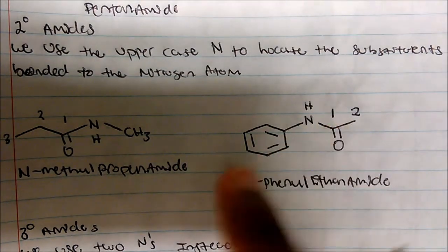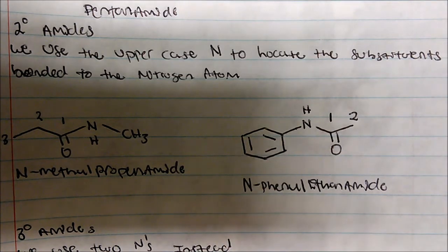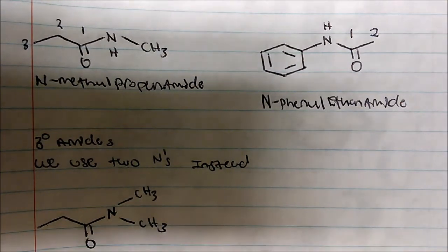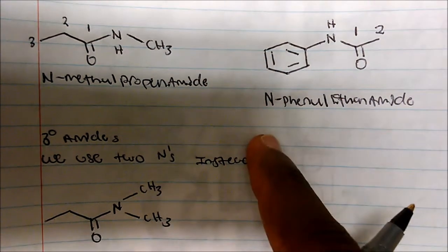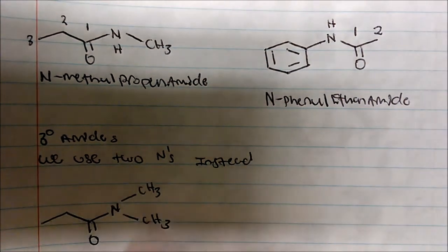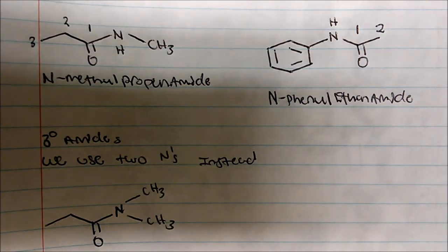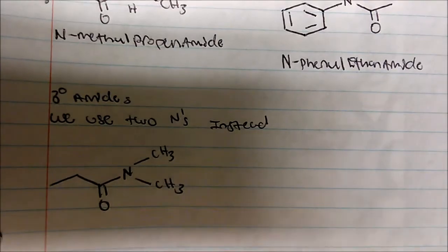Now for tertiary amides — these have no hydrogens on the nitrogen. The naming idea is the same as for secondary amides, with one difference: we use two N's instead of one, because it's tertiary.